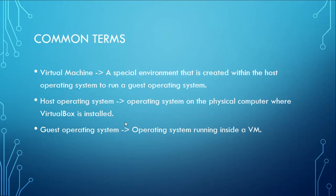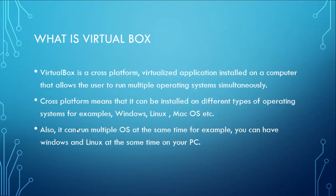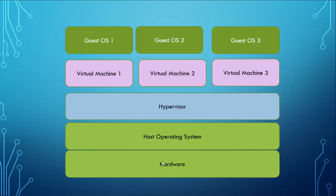Now some common terms. A virtual machine is a specialized environment created within the host operating system to run a guest operating system. The host operating system is the operating system installed on your physical computer. A guest operating system is an operating system running inside a virtual machine. Going back to our picture: the underlying hardware has the host operating system on top of it. A virtual machine is a specialized environment created using a hypervisor that emulates your physical hardware, and a guest operating system is installed on top of virtual machines.